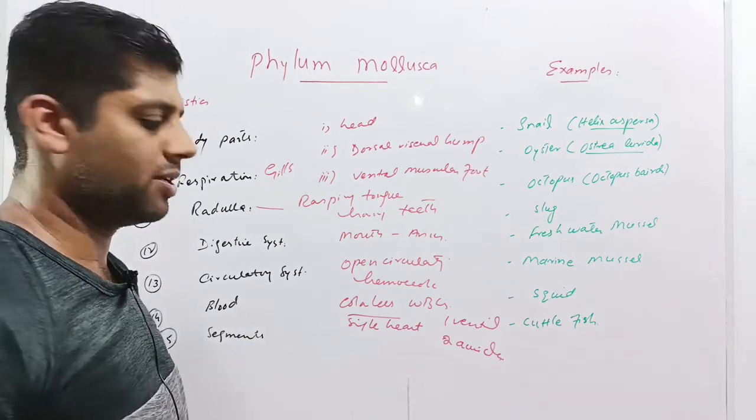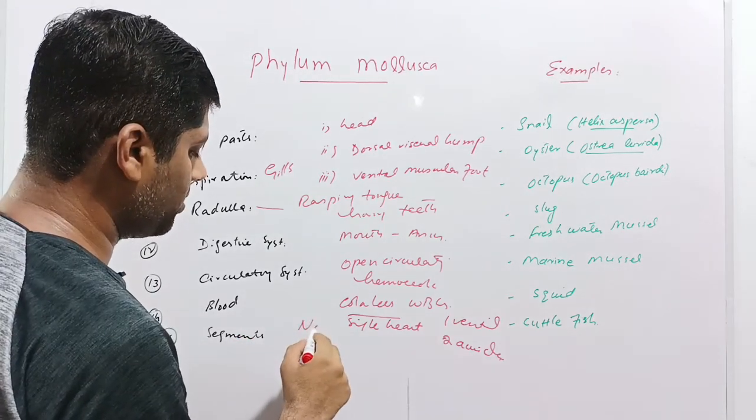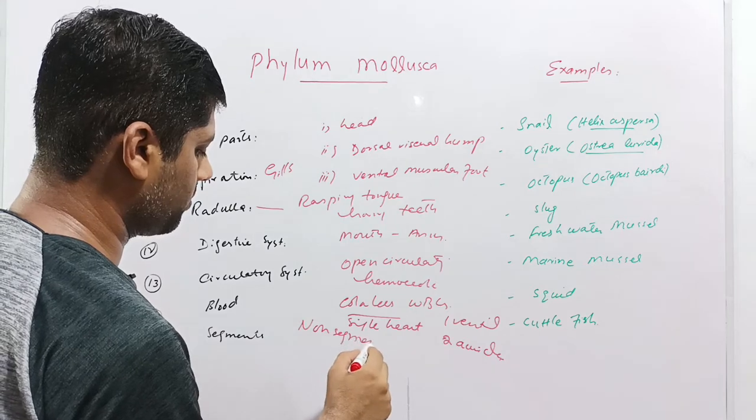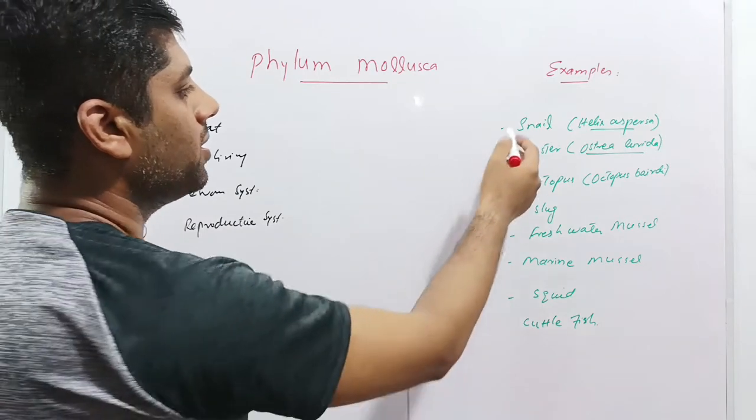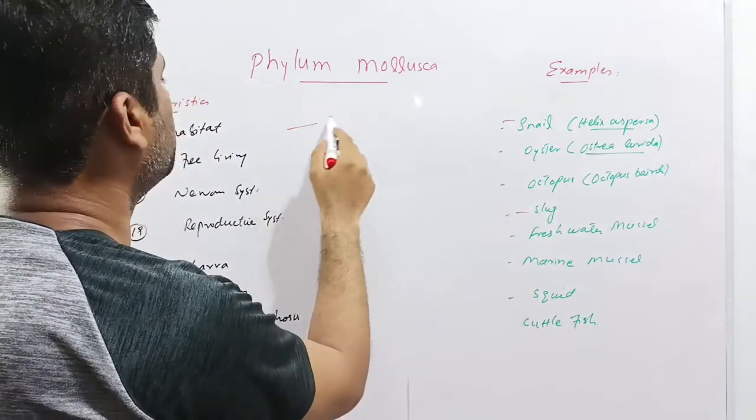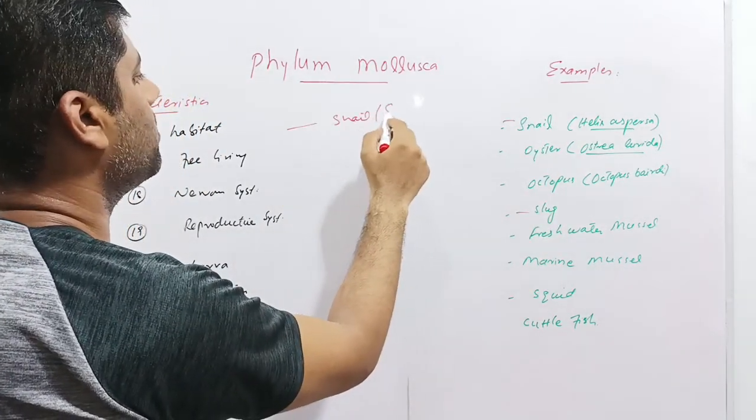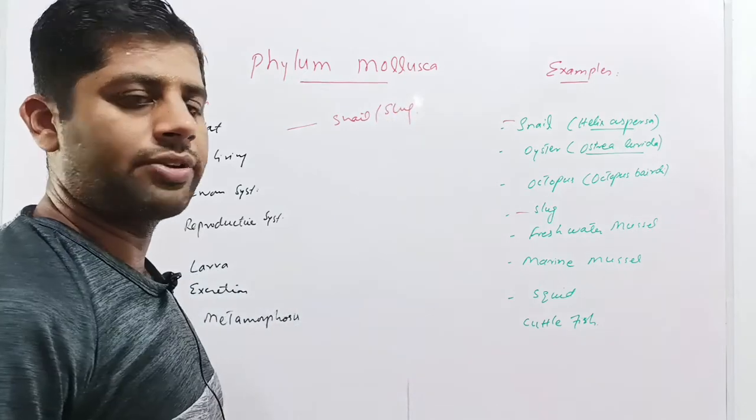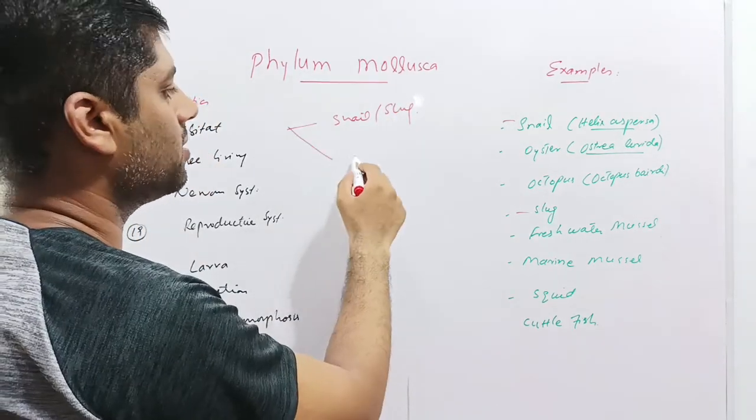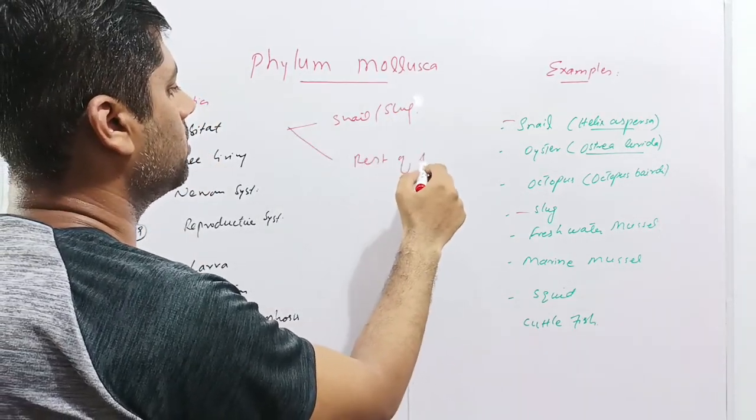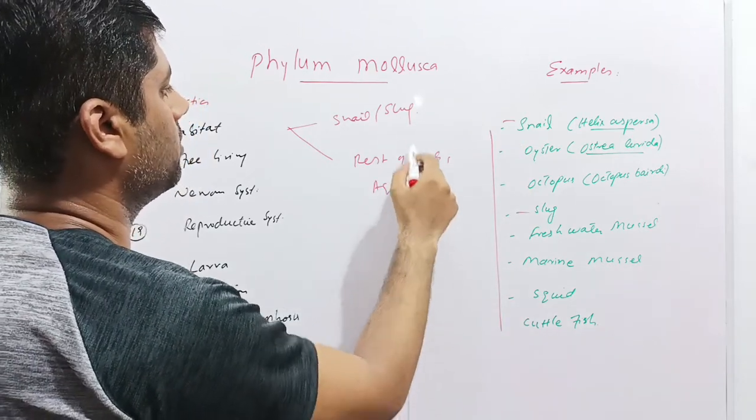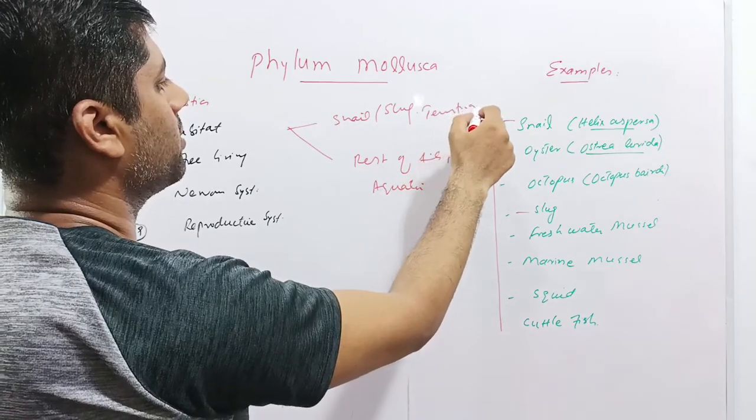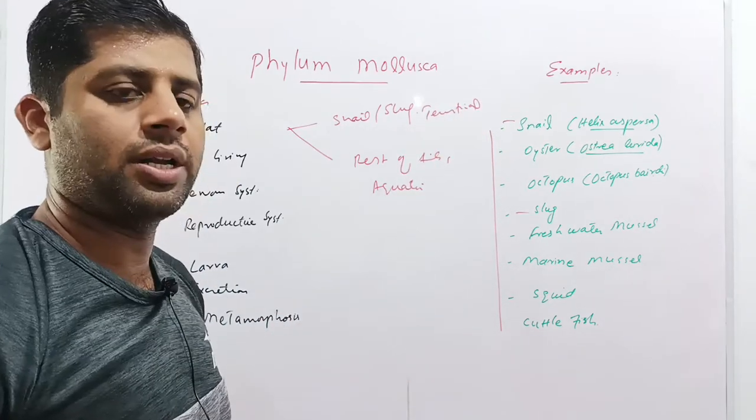These animals are non-segmented. Next is the habitat of the animals or the molluscs. As I have told you earlier, the snail and slug, these two are terrestrial animals found in the gardens and fields. While rest of the animals as I have listed, these are all aquatic. So snail and slug are terrestrial, while rest of the animals are all aquatic.